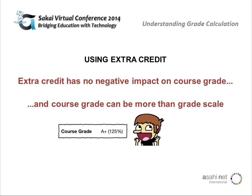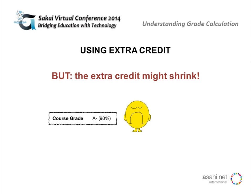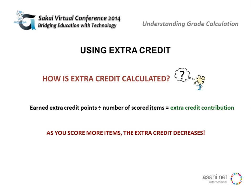The important consideration is that the extra credit you add with this new system might shrink. The reason has to do with how it's calculated: earned extra credit points divided by the number of scored items equals the extra credit contribution. So as you score more items, the extra credit decreases. That's something to keep in mind in terms of when you're going to add extra credit and when you're going to display your course grade.